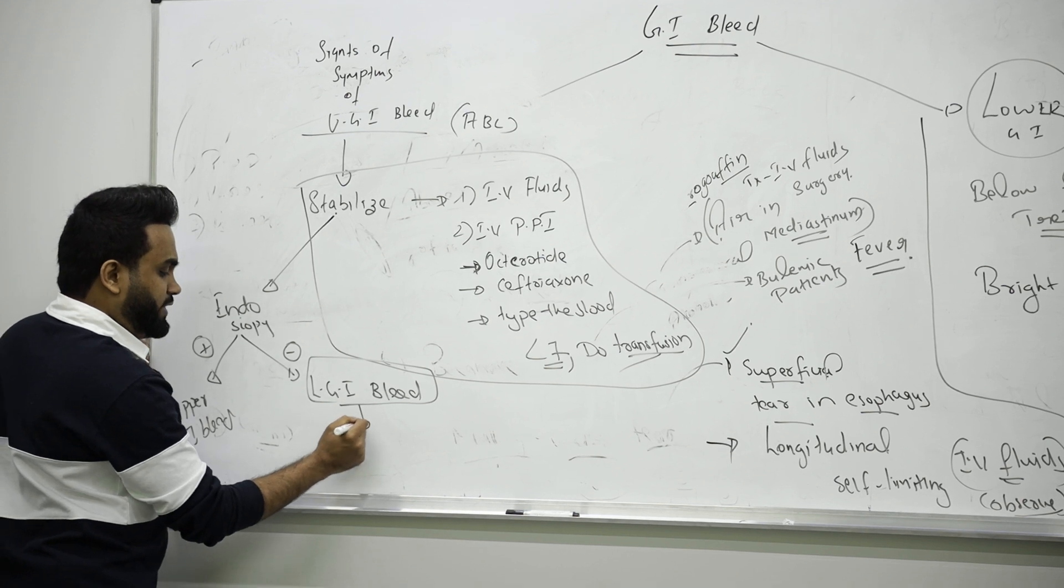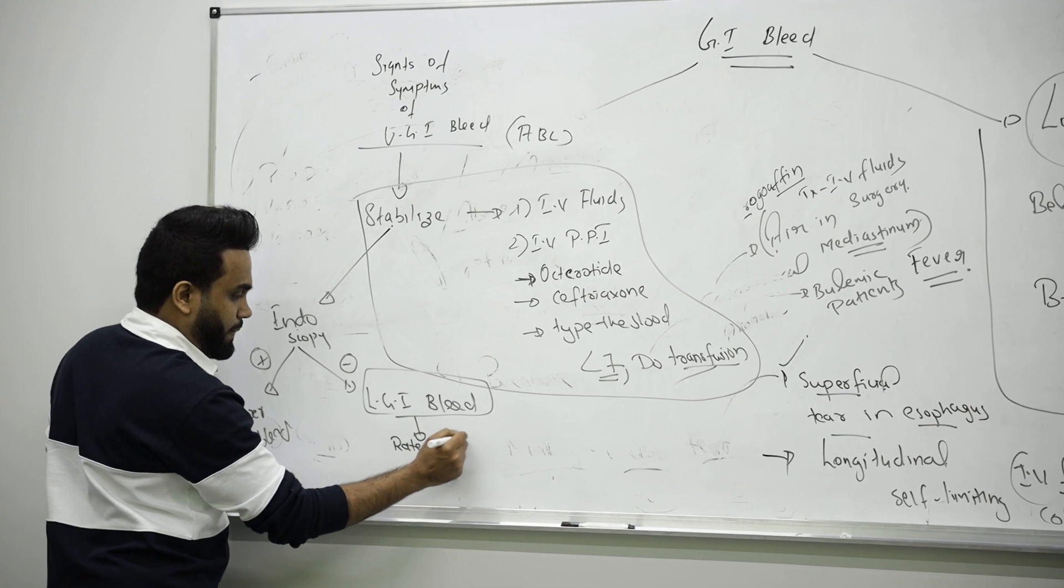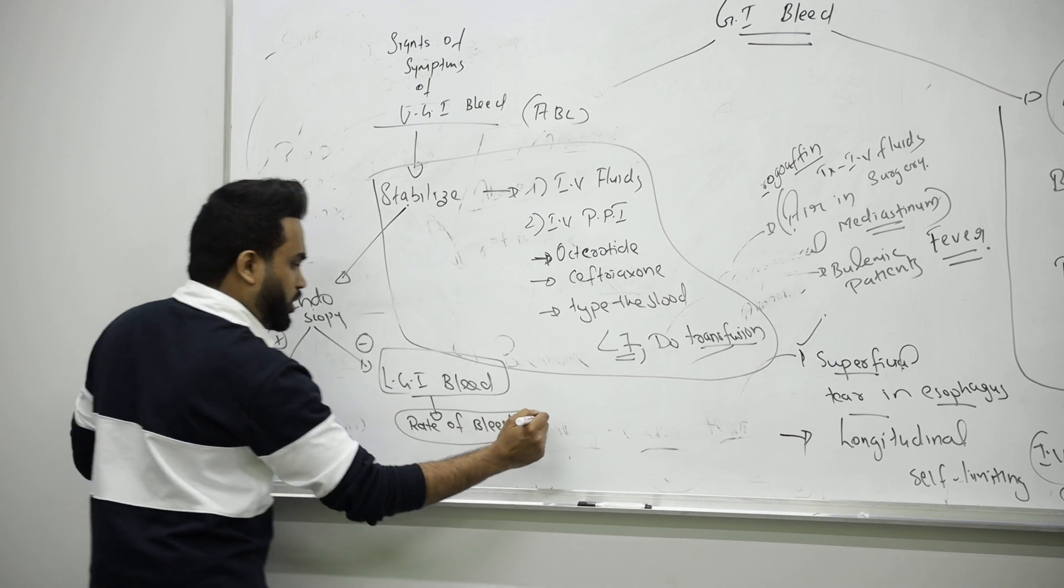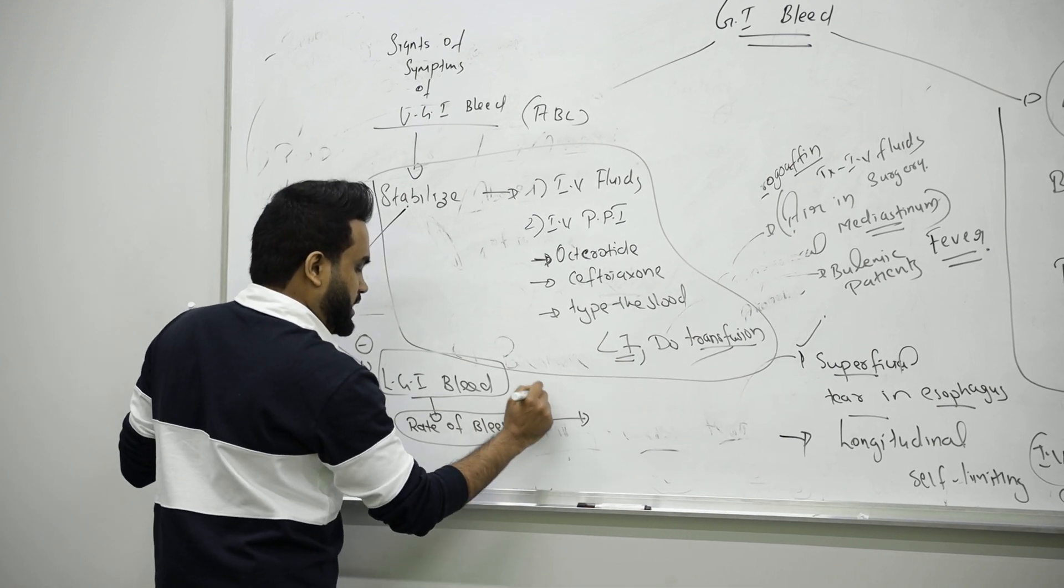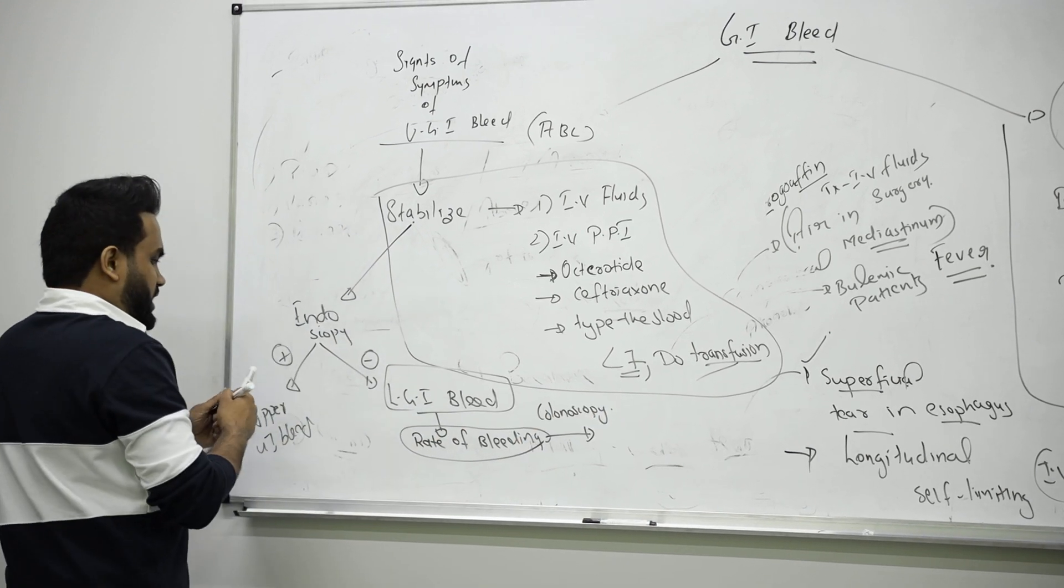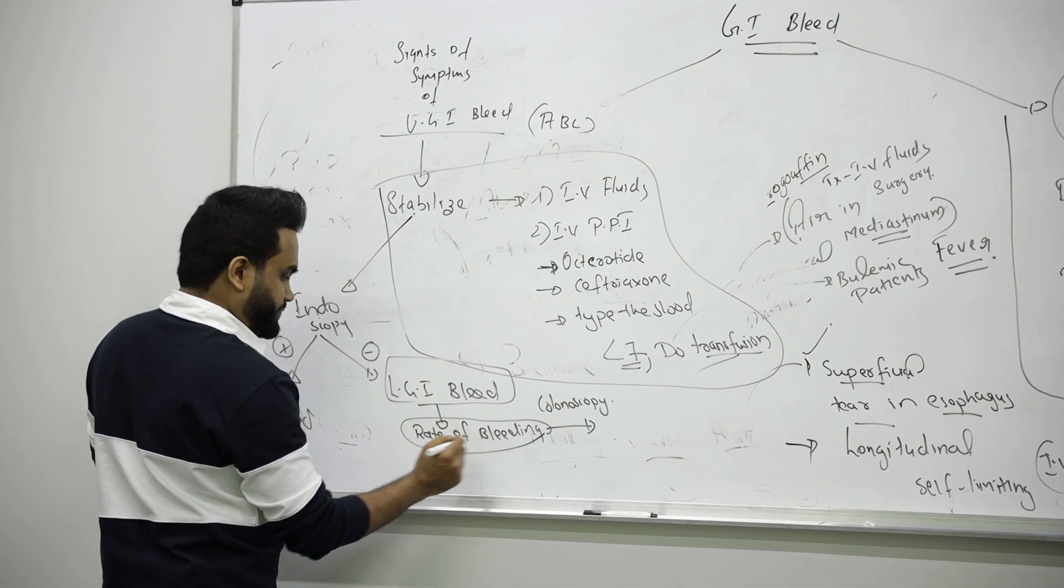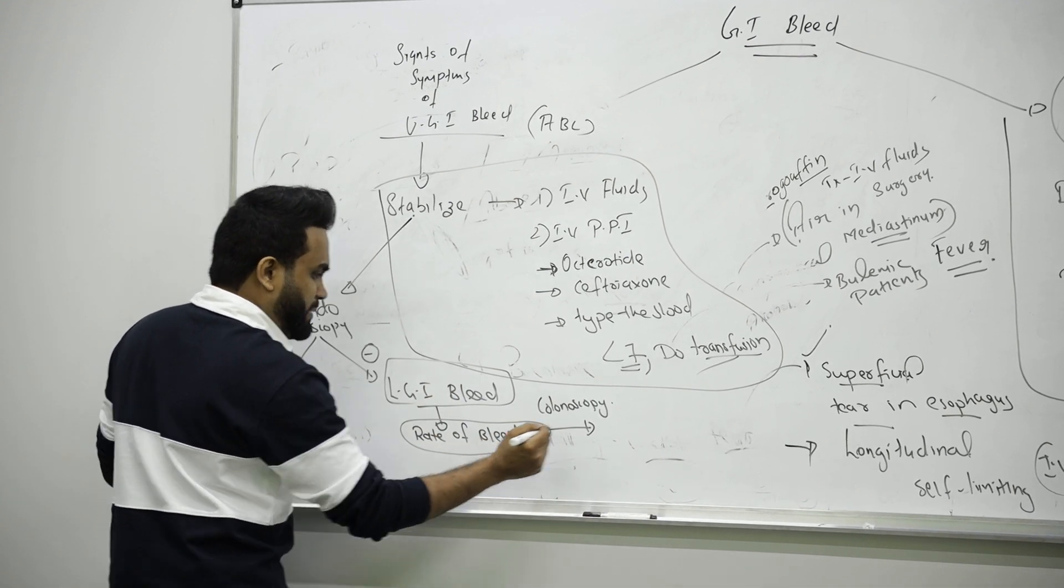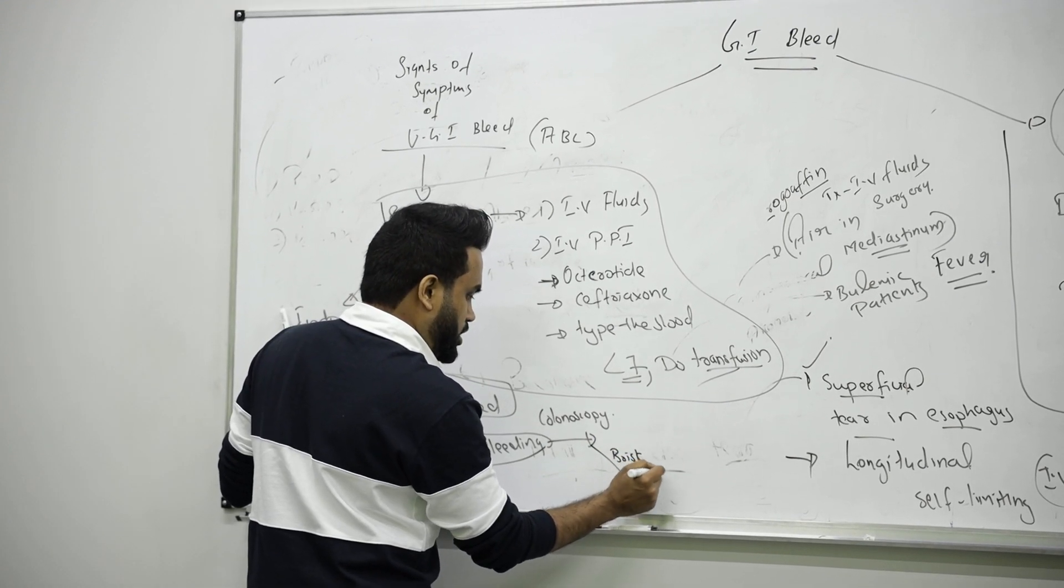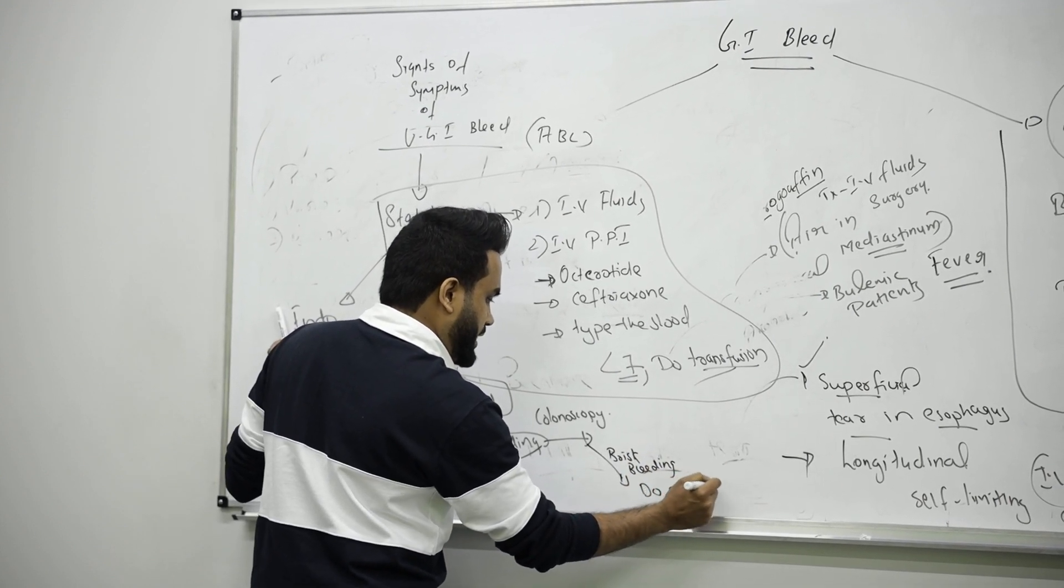For finding lower GI bleed, we find the rate of bleeding. How do you find it? By doing colonoscopy. If you see in colonoscopy there is a small bleeding—that is called brisk bleeding—do embolization or stop that bleeding.